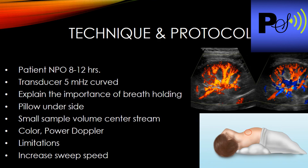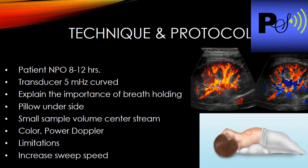For technique and protocol, ideally the patient should be NPO for 8 to 12 hours. Use a curved transducer, typically 3 to 7 MHz — you can stay around 5 MHz, but for small patients or babies don't hesitate to use a 9 or 15 MHz linear transducer. For lateral decubitus scanning, place a pillow under the patient and have their arm above their head to spread the ribs and improve access.